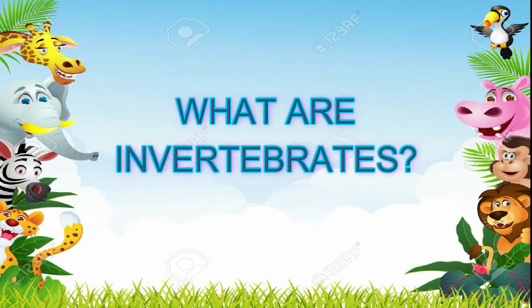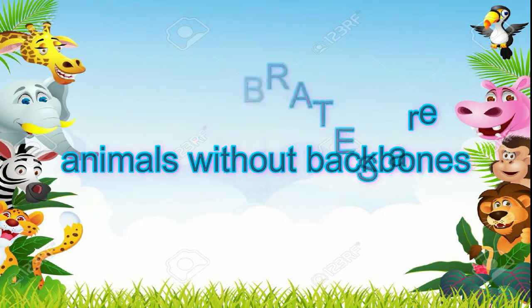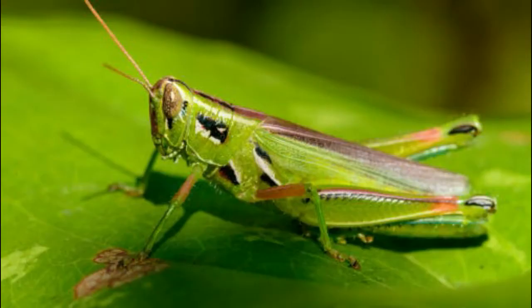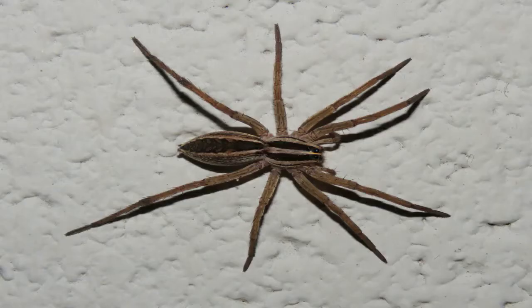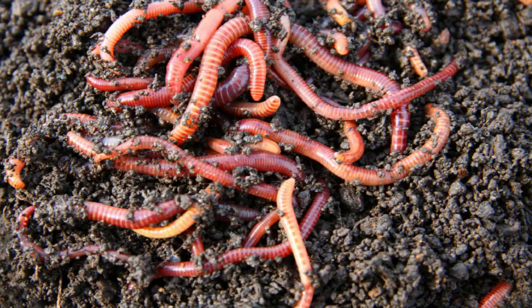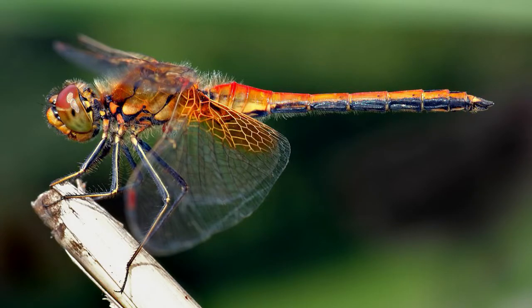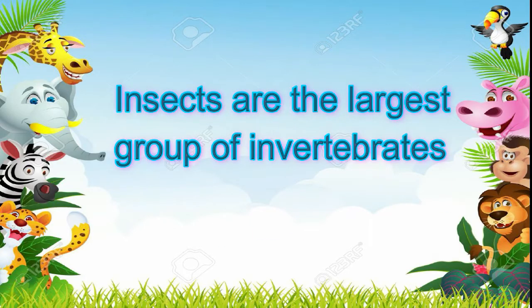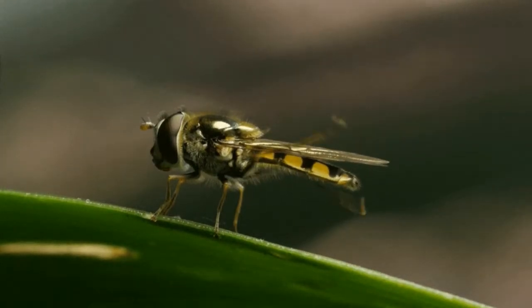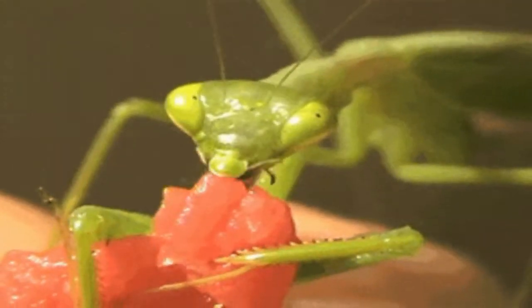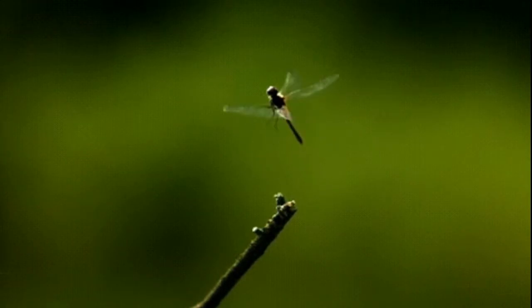Invertebrates are animals without backbones. Most of these animals can take care of themselves as soon as they are hatched from eggs, and invertebrates live and grow in different ways. Insects are the largest group of invertebrates — they are animals with six legs, which they use for moving around and capturing and holding their food. Most insects have one or two pairs of wings, which they use to move from one place to another.